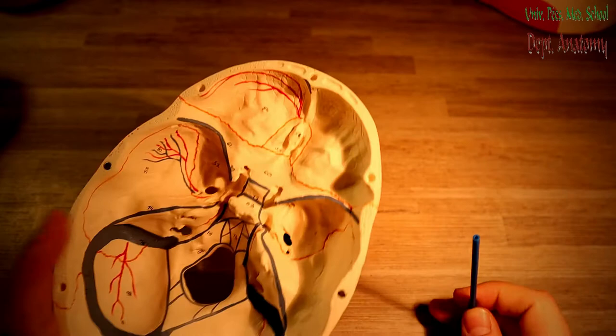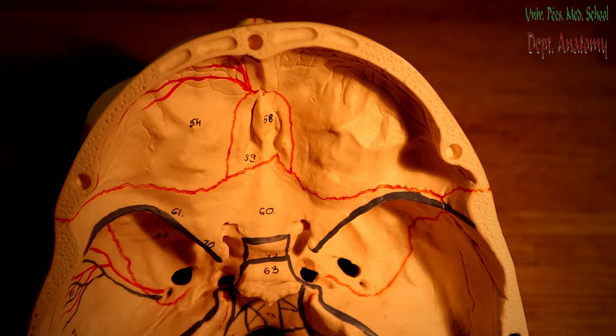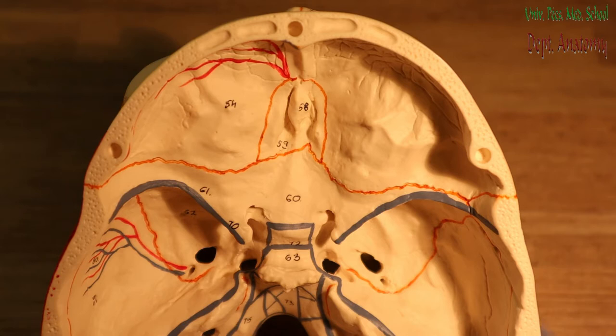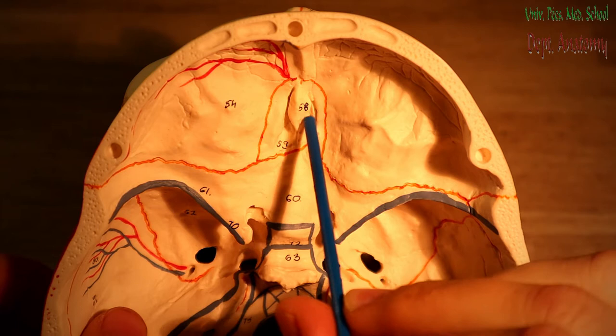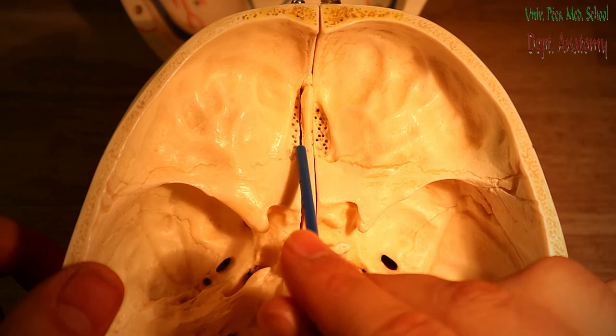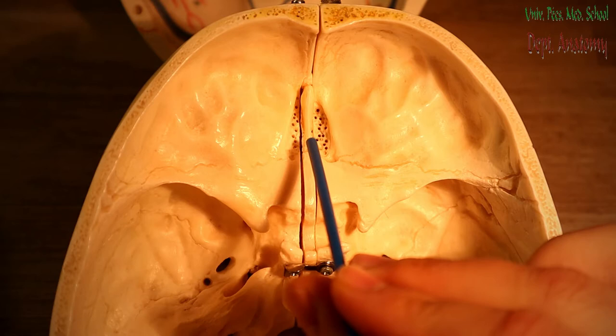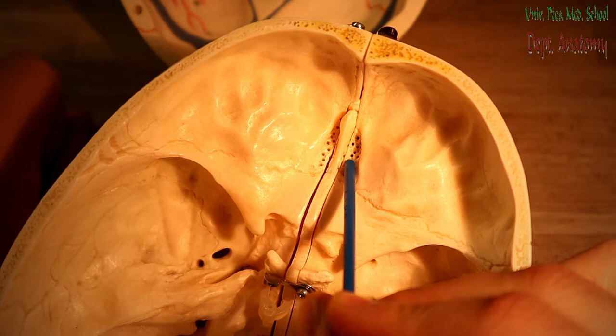Now I would like to show the different structures in the anterior cranial fossa, including the structures passing through these openings. Here you can see the cribriform plate, or lamina cribrosa. This plate is perforated with small holes. The structures passing through are the olfactory fila, and also the anterior ethmoidal nerve and the anterior ethmoidal artery, which come from the orbit.